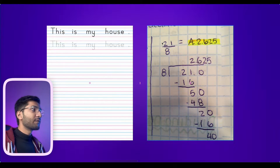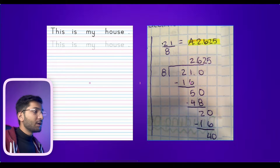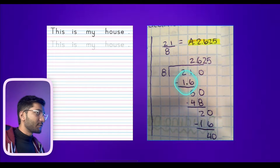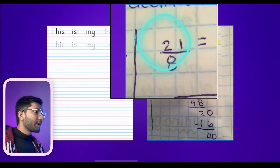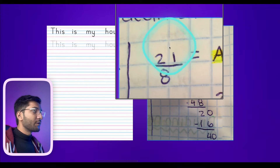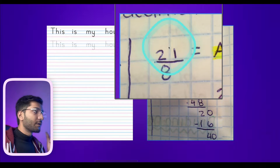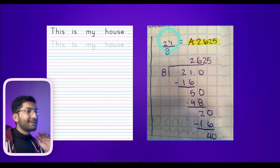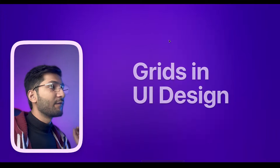Similarly in math notebook we were allowed to write only one number inside one box. Although the writing on this page is not that much defined — I copied this page from the internet — but you got the idea what I'm trying to say. We were allowed to write only one number in one column or one box. The similar thing happens in UI design.